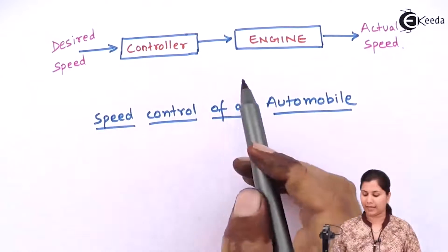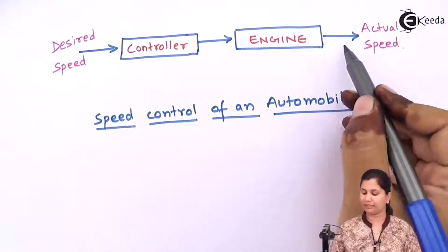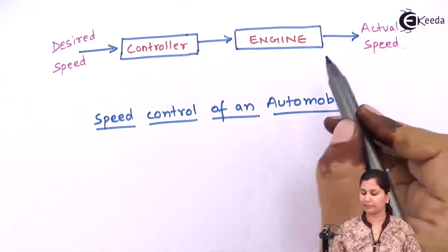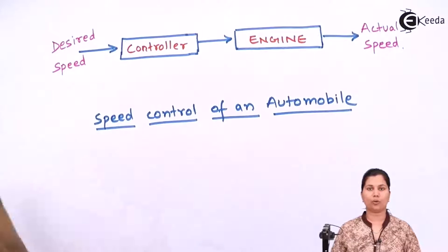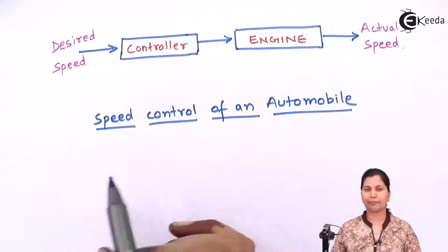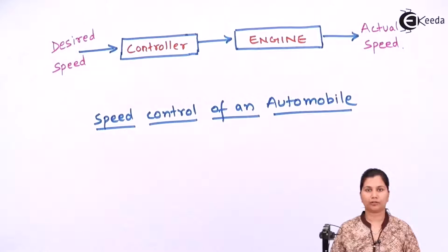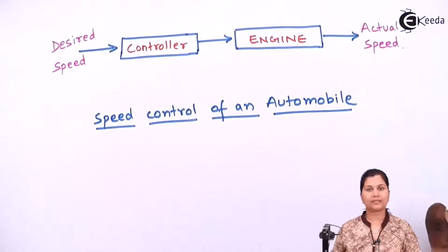There is no feedback structure in this system so that we can measure the actual speed and make it close to the desired speed. This is an example of an open loop control system. Now let's draw the generalized block diagram of an open loop control system.